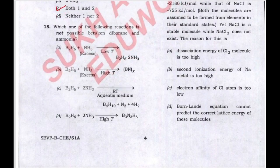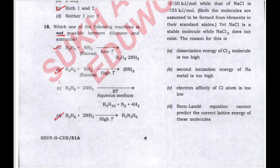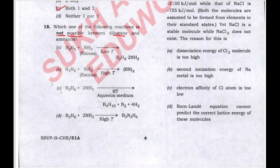In the 18th question: which one of the following reactions is not possible between diborane and ammonia? Options A, B, and D — all three reactions are possible. The reaction which is not possible between diborane and ammonia is C. So the correct answer is C.